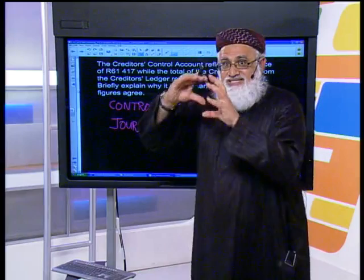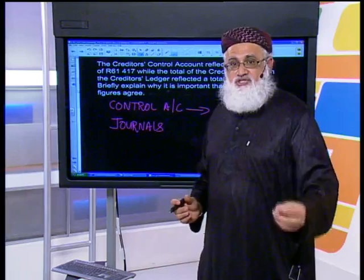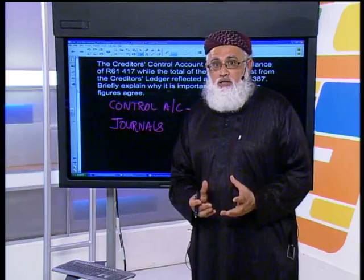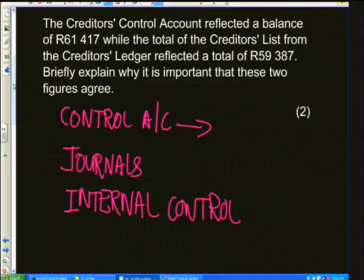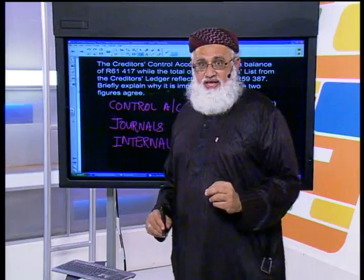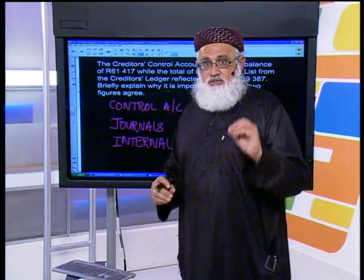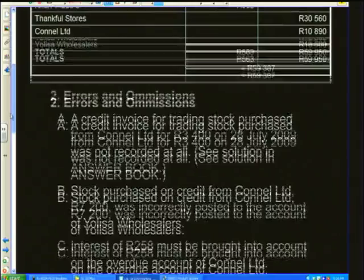Whatever you've done to individual creditors — creditor A, creditor B, creditor C — you've done in total to your creditors control account, so at all times these two must be in balance. There may be errors, omissions, or fraud taking place, so it all falls within the ambit of internal control. Internal control is there to safeguard the assets of a business — that's the reason why we ensure we have internal control. Going back to the question: there were certain errors and omissions. How are we going to deal with them?